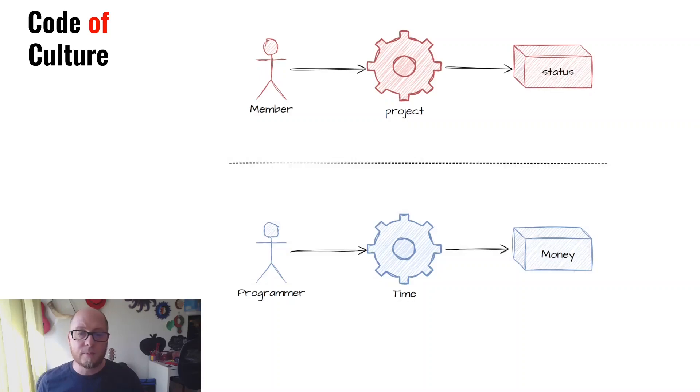In the previous episode, we explored two different perspectives on open source: one as an egalitarian community based on common efforts and status, and the other one as a capitalist market, where programmers sell their time and knowledge. In Marxist anthropology, we call this production modes. They are different ways of organizing social and economic relations around the production and distribution of goods and services.